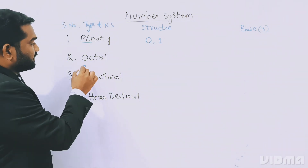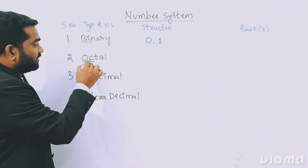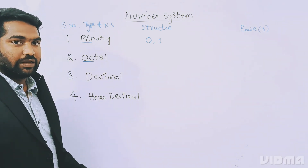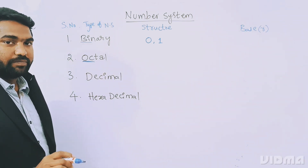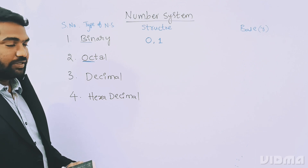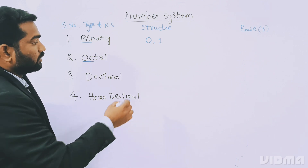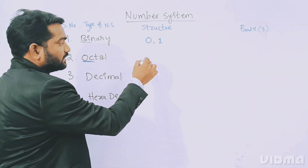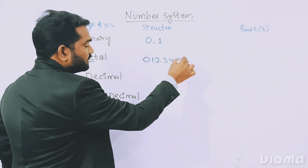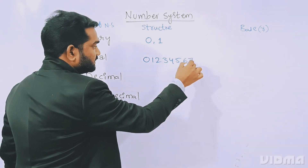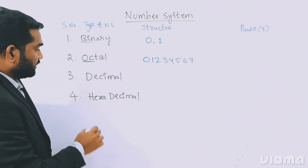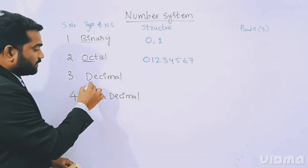Coming to octal number system — the name itself indicates 'oct,' meaning eight values. Those eight values are: zero, one, two, three, four, five, six, and seven.